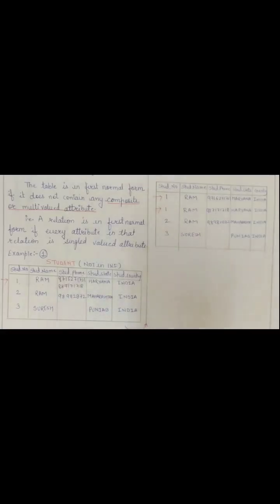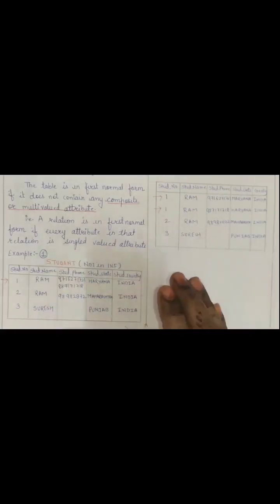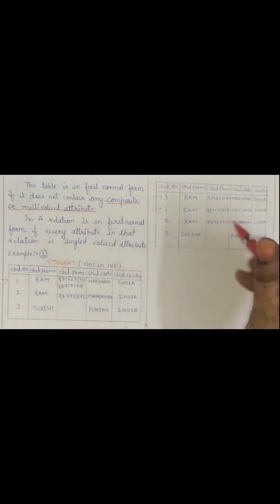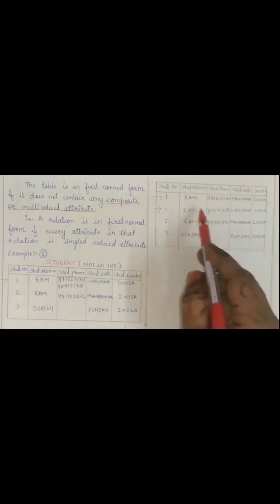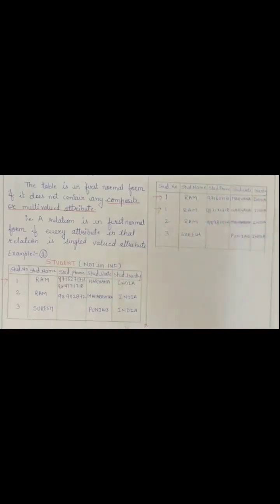Remember one thing: it is considered a bad database design if it is not at least in first normal form. Always remember, for first normal form all attribute values must be single-valued — atomic values for every attribute. Thank you guys. Please like and subscribe my channel if you have liked my video.